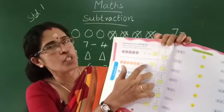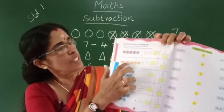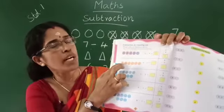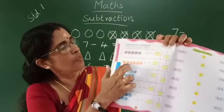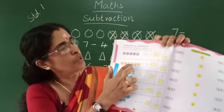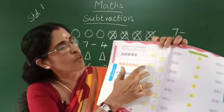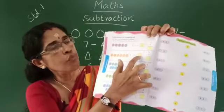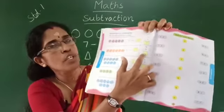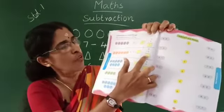Next picture. 6 minus 2. There are 6 pictures. We cross out 2. So, 1, 2, 3, 4. 6 minus 2 is equal to 4.